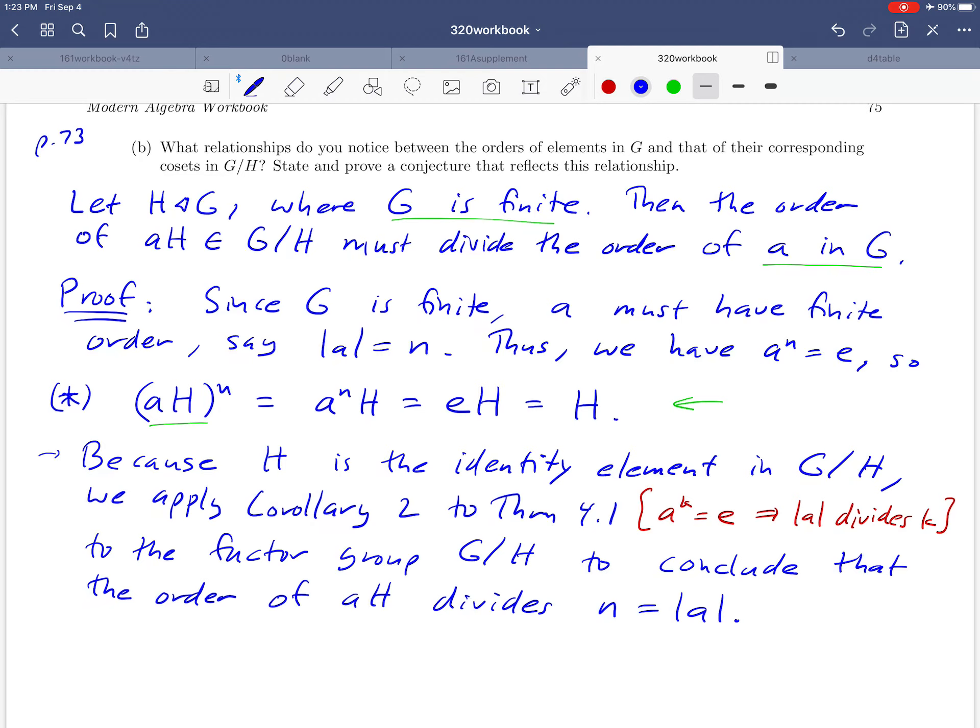So if you look back at where we started with our statement here, we've proven what we wanted to prove. We started with an element of order N, and we demonstrated that the coset generated by that element, whatever its order is, it has to be a divisor of N. All right. Thank you.